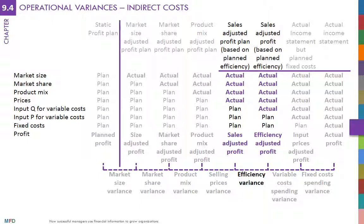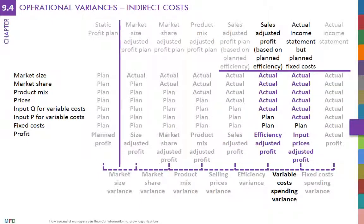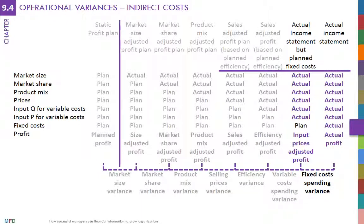Spending variances for indirect variable and fixed costs are similar to direct costs. For variable indirect costs, the variance is the difference between costs estimated using the actual level of allocation base times the budgeted allocation rate, and the actual variable indirect costs — that is, actual number of hours times budgeted allocation rate minus actual allocation rate. For fixed indirect costs, the variance is the difference between budgeted costs and actual costs.